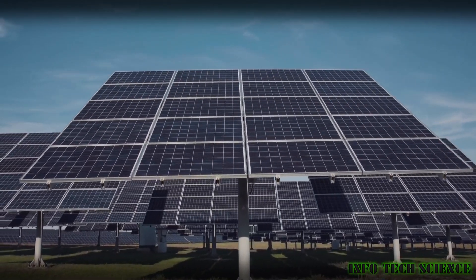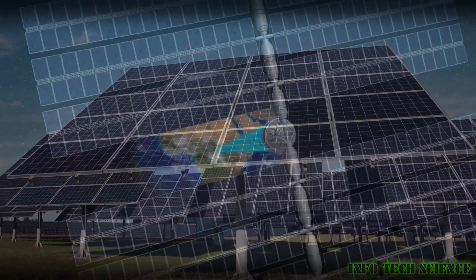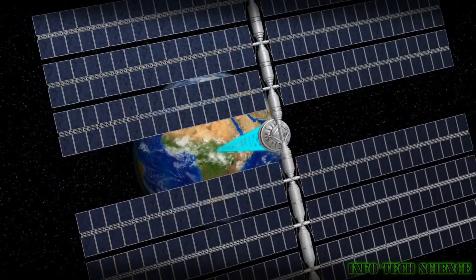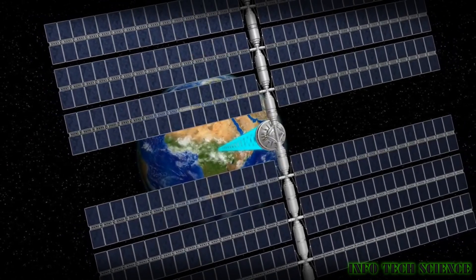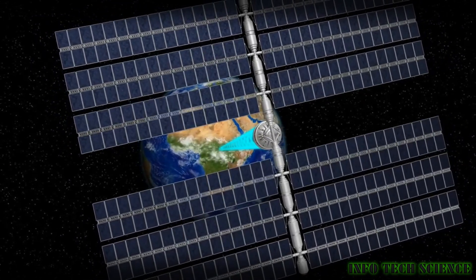Higher efficiency: solar panels in space can achieve higher efficiencies due to the absence of atmospheric interference and the ability to optimize their orientation towards the Sun.